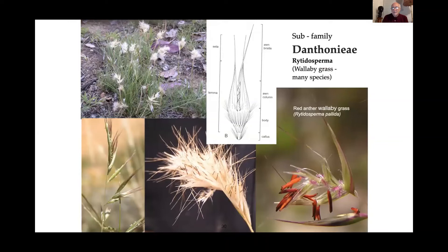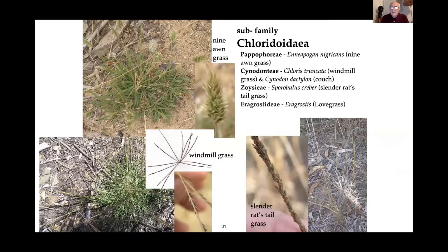Then we get on to the Danthonia family or Rytidosperma species — these are the wallaby grasses. That seed head is quite unusual. They are often called white tops because they start green at the bottom left and then, as they age, they turn white. Quite a useful grass. Then red anther wallaby grass, which has brilliant red flowers. Some others include nine-awn grass, windmill grass, Sporobolus — I love that grass just because of the name — and the native one tends to have gaps in the inflorescence coming up the stalk, while introduced ones don't.